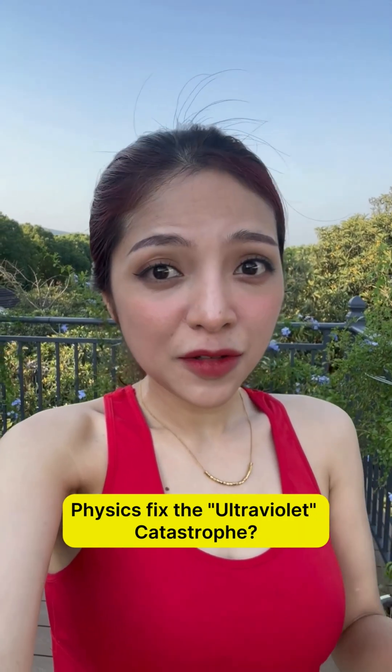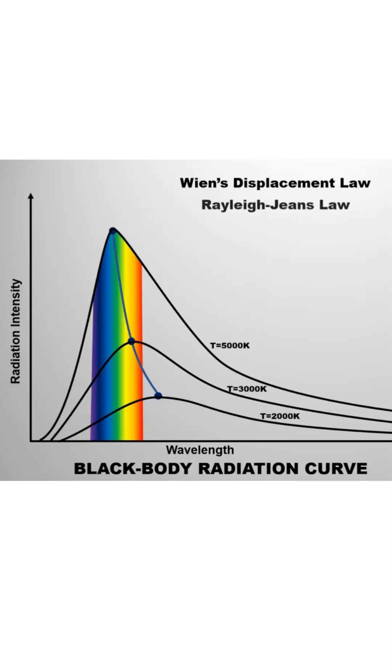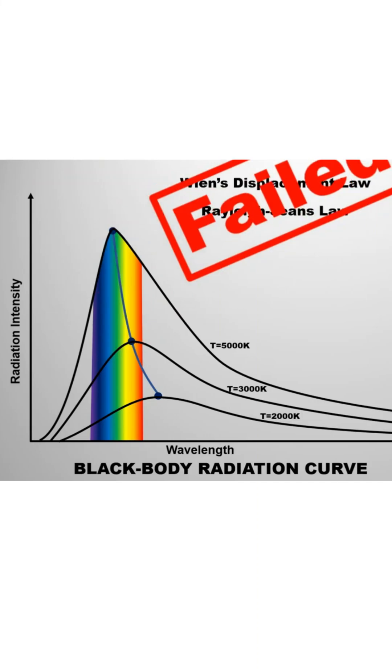How would Cartesian physics fix the ultraviolet catastrophe? The ultraviolet catastrophe is from the wrong prediction of the Rayleigh-Jean's law that says high-frequency light would become infinitely bright.